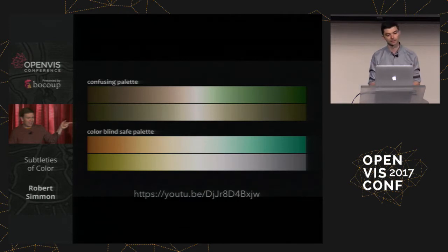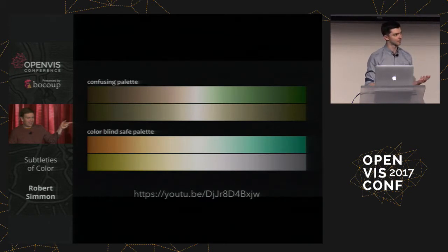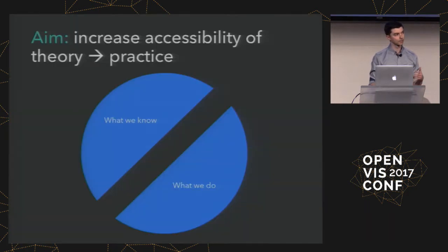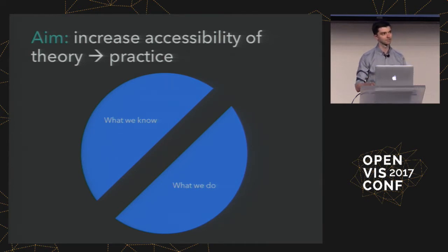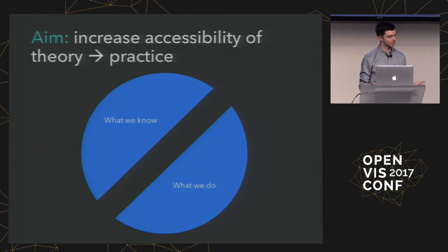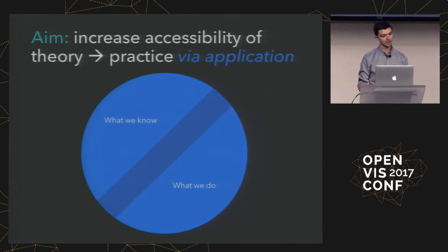The aim of today's talk is broadly addressing this divide that often happens when we talk about visualization design — the constant battle between what we know and what we do. This applies in research, where papers sometimes live in the ivory tower and don't make it to practice. Even as educated designers, when we have deadlines, we might not always do what we know is most effective. What I'll be covering are examples of how we can help bridge this divide by applying theory through computation.